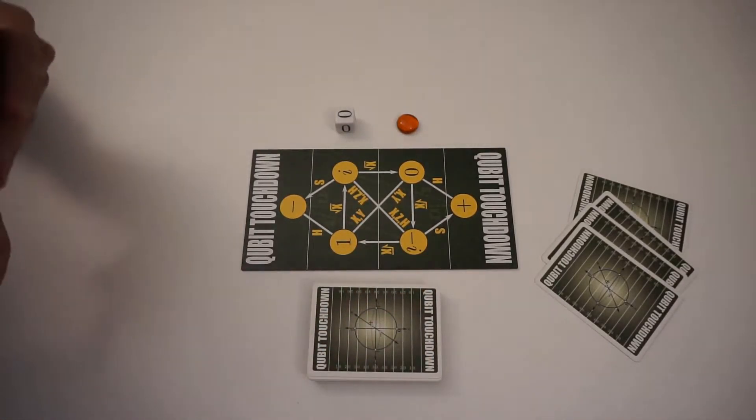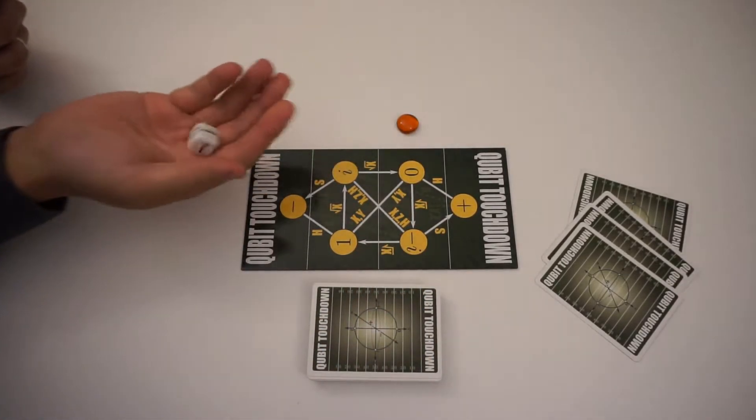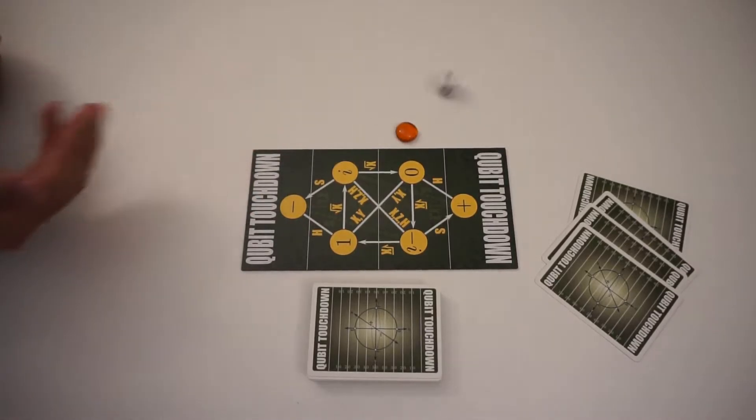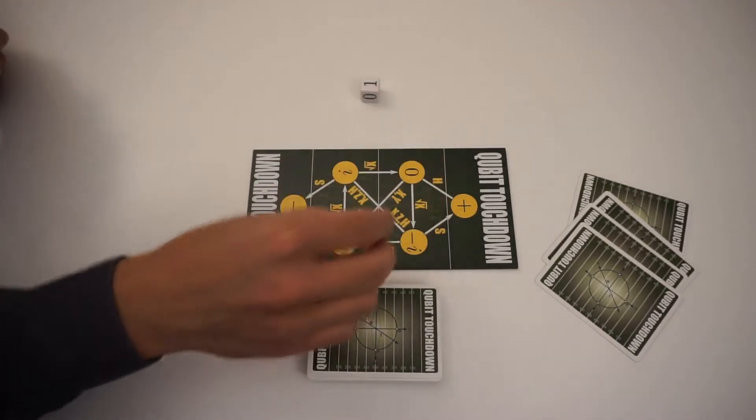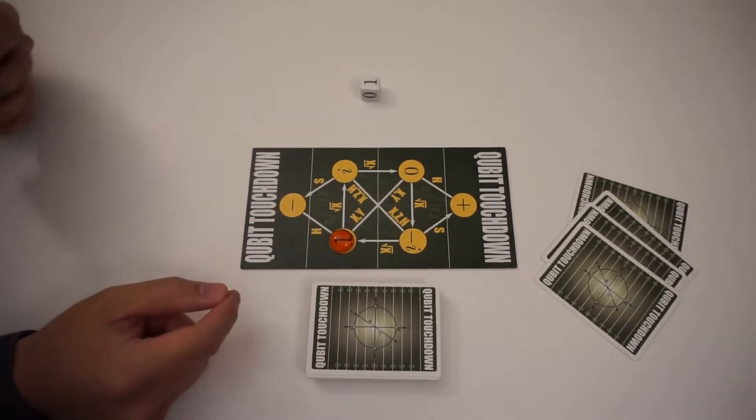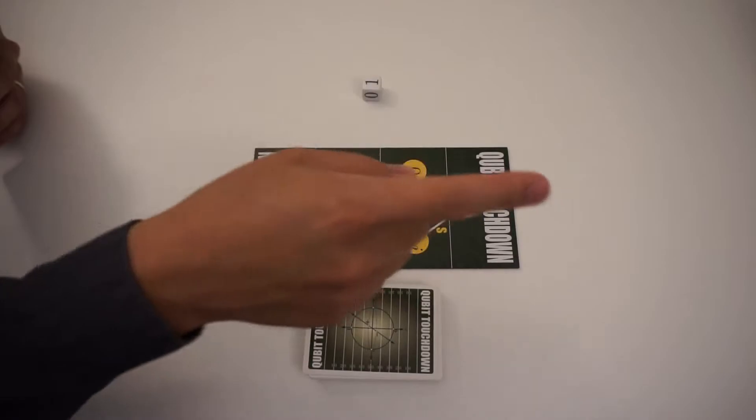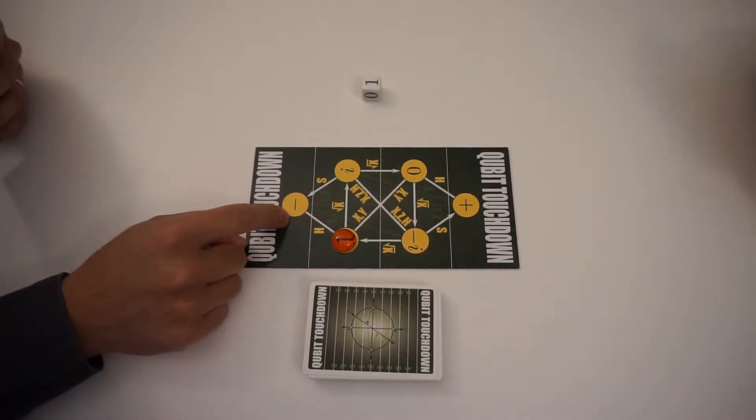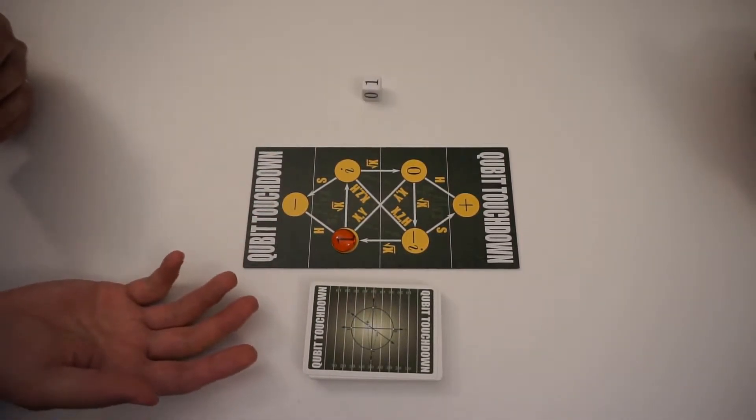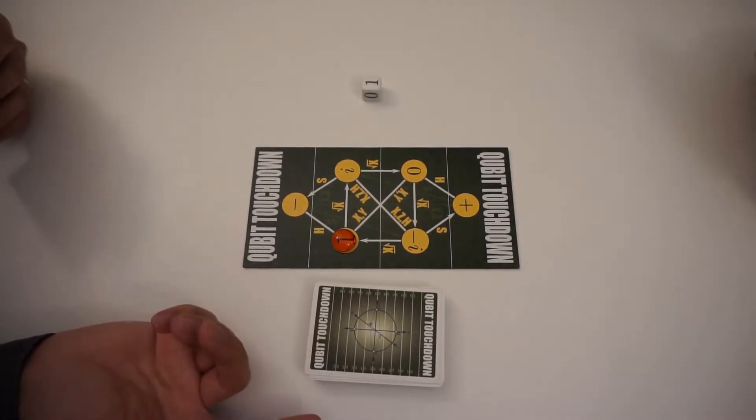And I can kick off first to start off. So I'm going to roll this binary die, and you see that the outcome is one so the football is going to start at one. And so I'm trying to get the football to this end zone to score touchdowns and my opponent is trying to get the football to this end zone to score touchdowns. And whoever scores the most touchdowns by the time all the cards are used up wins.